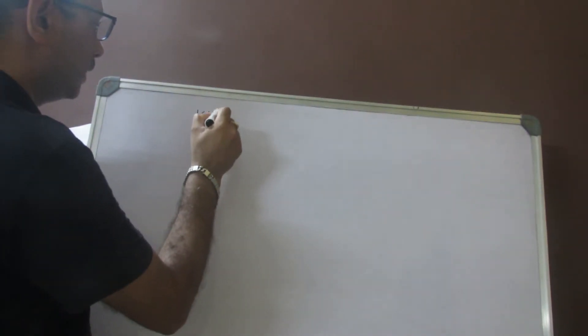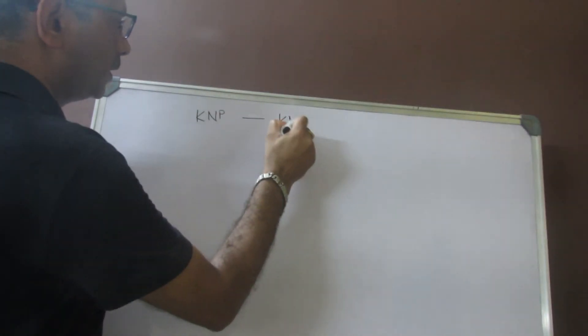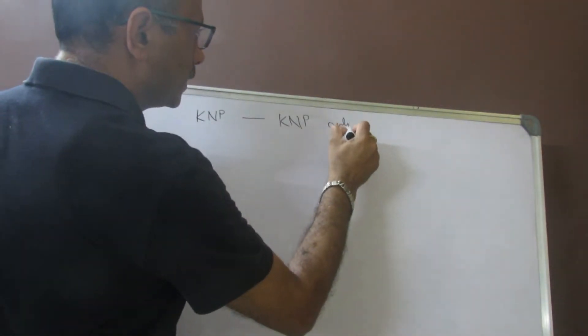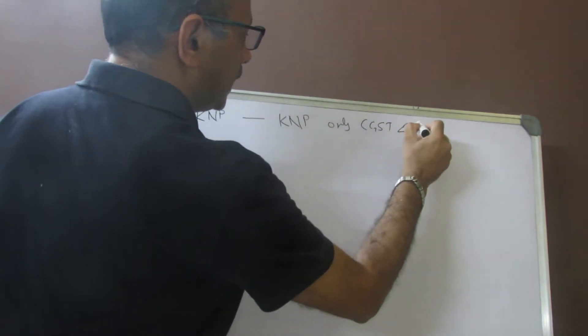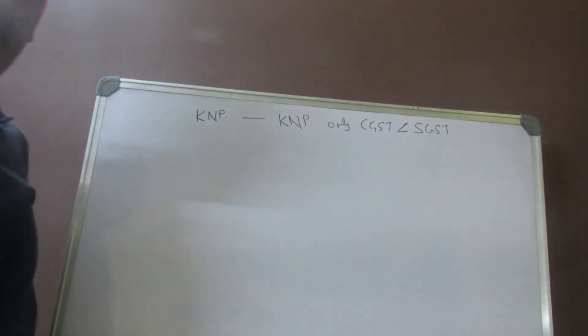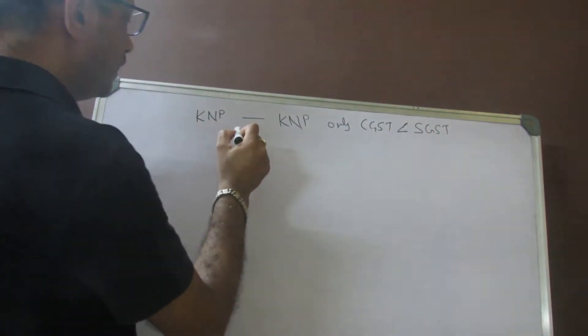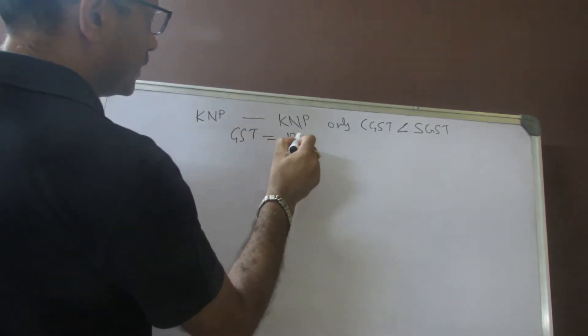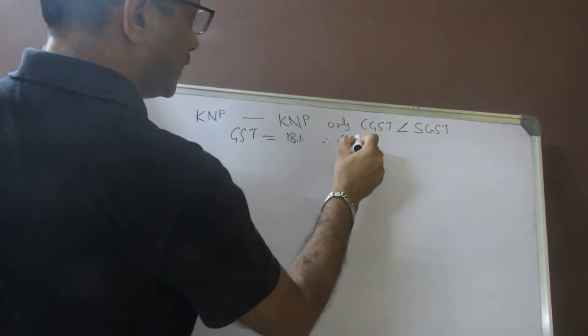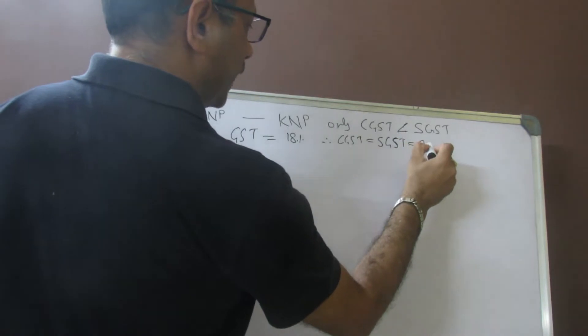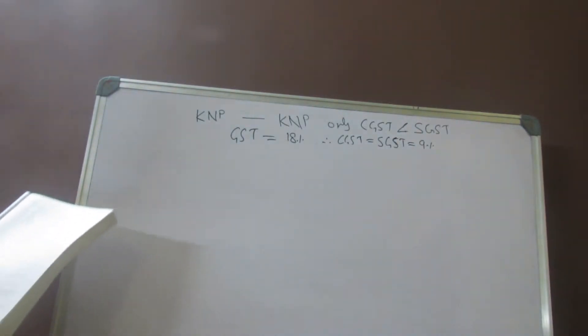Now what is happening in the first part? A dealer in Kanpur is selling to another dealer in Kanpur. That means only CGST and SGST are applicable. We know that if GST is given as 18%, therefore CGST should be equal to SGST and it should be 9%, because they are equally distributed.